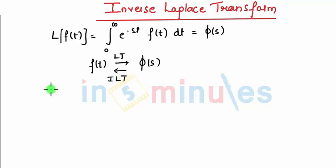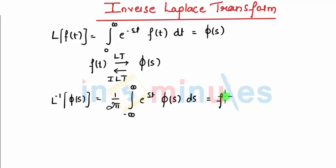So I can say L inverse of φ(s) is equal to 1 upon 2π times the integral from minus infinity to infinity of e raised to st times φ(s) with respect to ds, that will be equal to f(t).